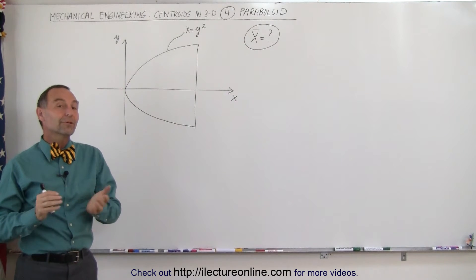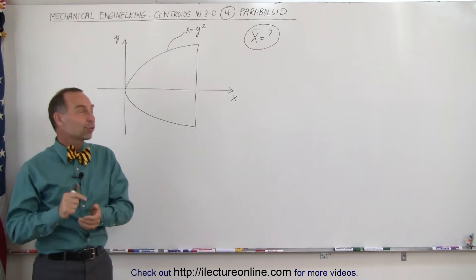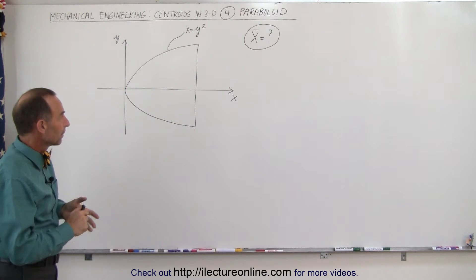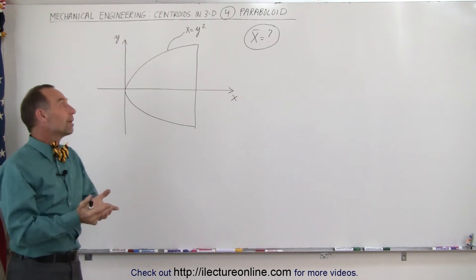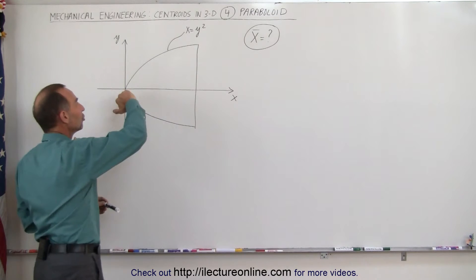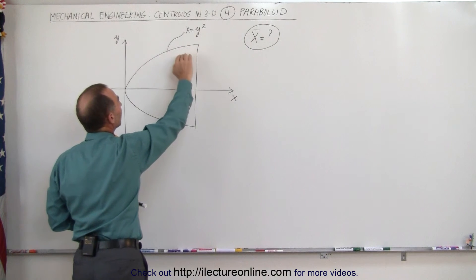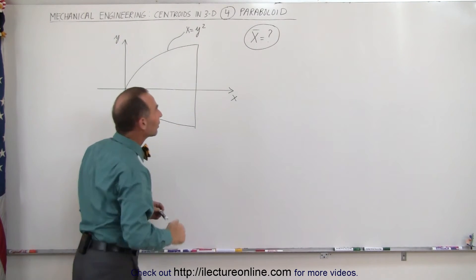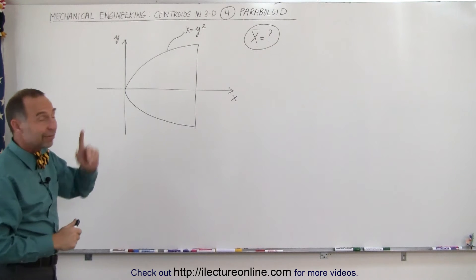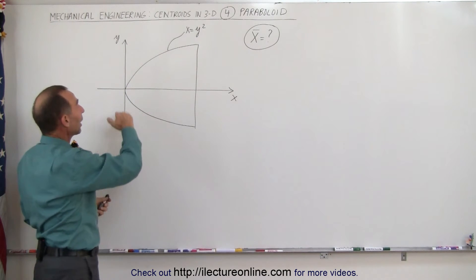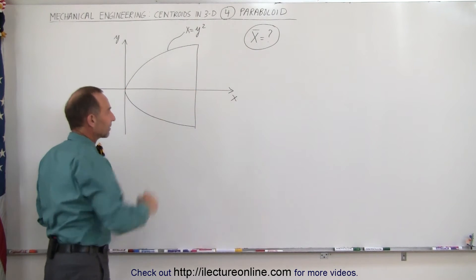Welcome to iLectureOnline. Now we're going to find the x-coordinate of the centroid of a paraboloid. Imagine this to be a three-dimensional object, and the shape of the edge can be defined by the equation x equals y squared. We're trying to find the x-coordinate only.